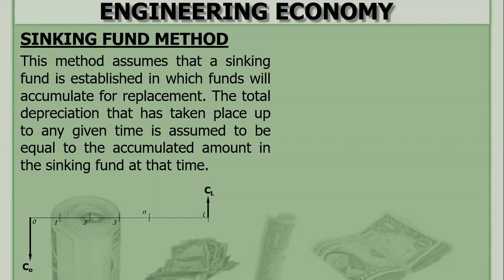Of course, you need additional capital. For example, for the equipment the original cost is $1 million. After the useful life you can sell it at $100,000. So in order to buy a new equipment, you need to raise an amount of $900,000. The first cost is $1 million.